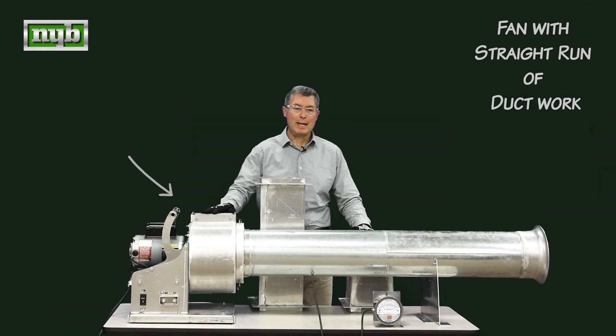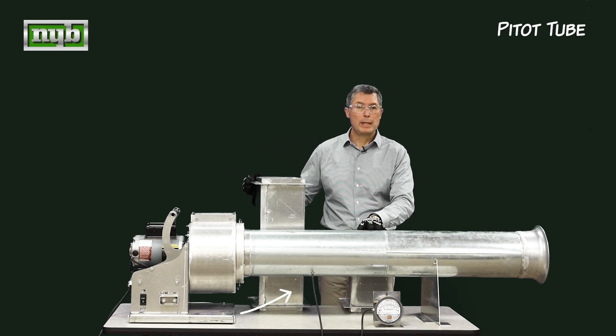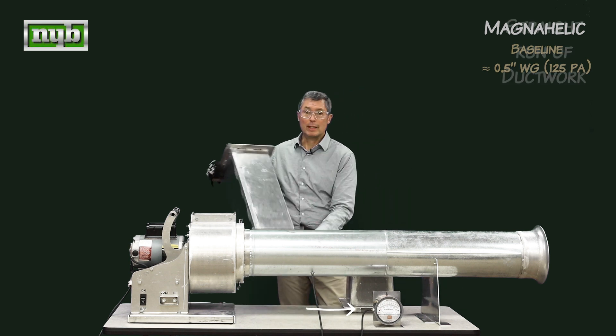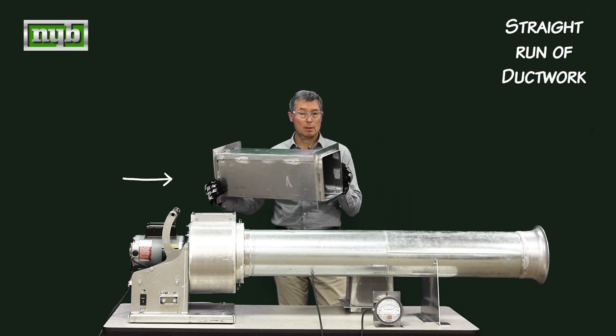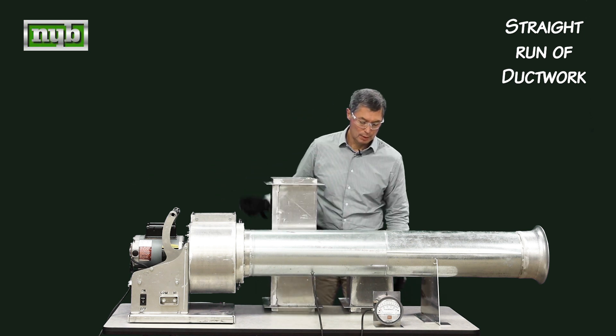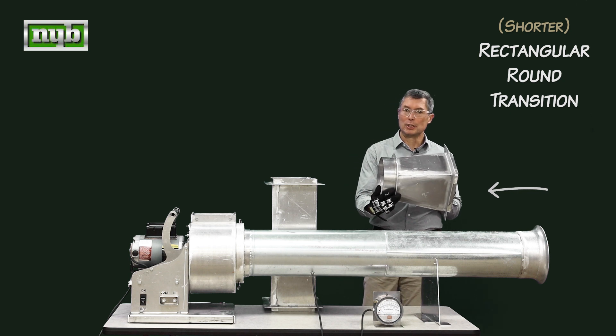For today's presentation we have a fan, straight run ductwork, bell mouth inlet, pitot tube, some tubing connected to a magnetic helic. This can give us a visual representation for how the fan's performance changes throughout the presentation. We have a straight run of ductwork, rectangular in shape, and we have a shorter rectangular round transition as well.